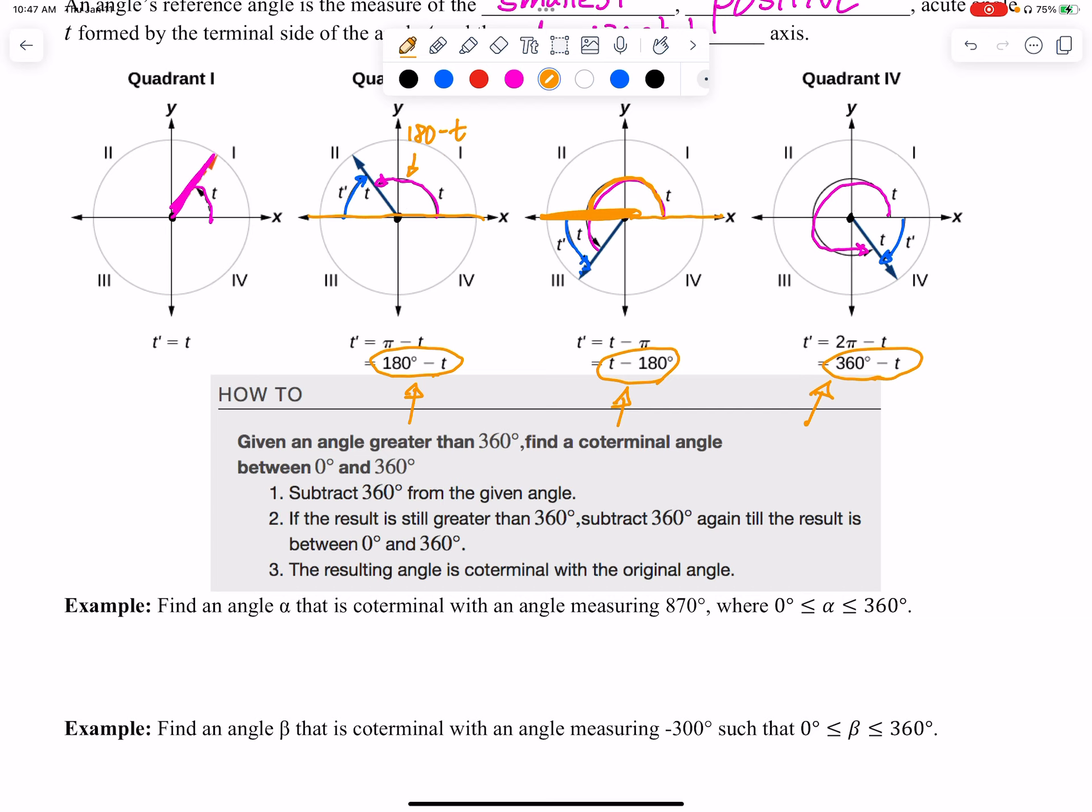Find an angle α that is coterminal with an angle measuring 870°. So, it says coterminal, not reference, so be careful with that. We're not trying to find a reference angle, but we're just finding a coterminal. So, I'm going to take 870°, and I'm going to minus 360s until I get in between 0 and 360°. So, I'm going to minus 360°. What's that going to be? That is 510°.